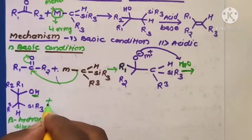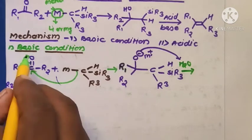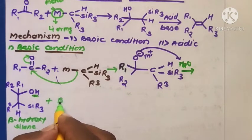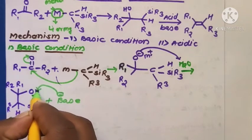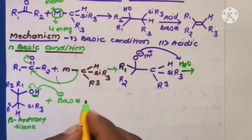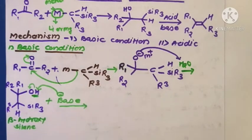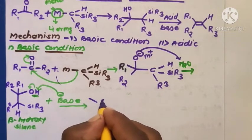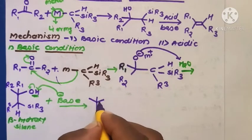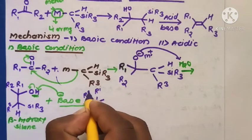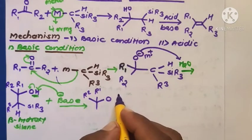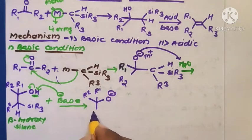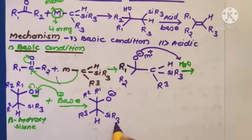This beta-hydroxy silane molecule can react in the presence of basic conditions. In the first step, under basic conditions, the base abstracts an acidic proton. Then the bonding electrons shift toward the oxygen atom to form the molecule with R1, R2, O minus ions, and the Si(R3) group with H remaining.